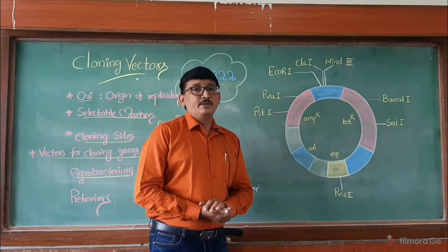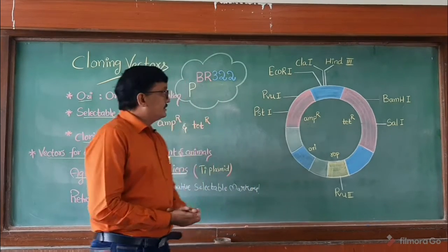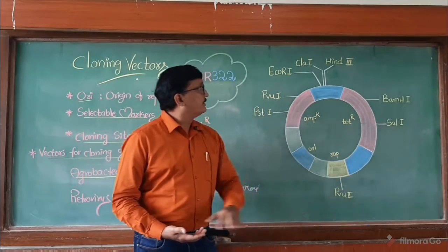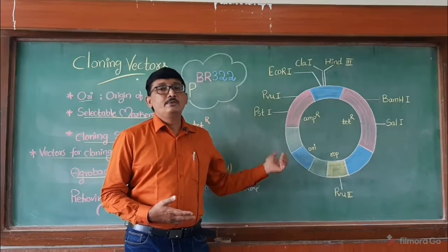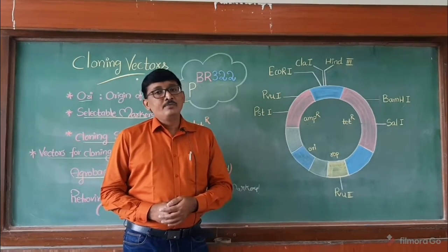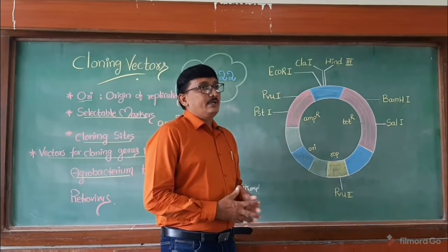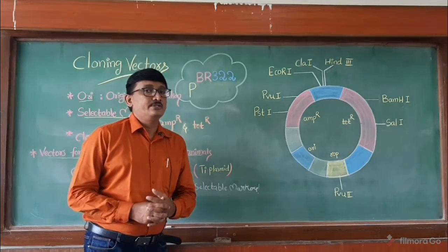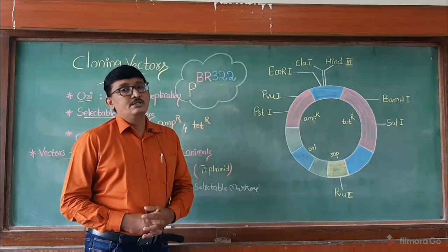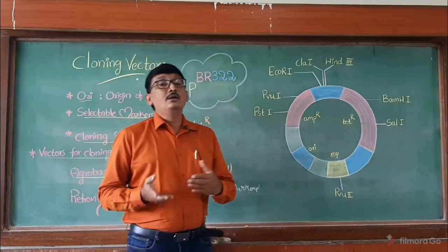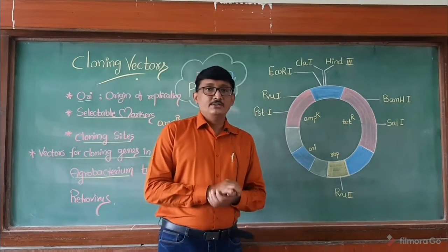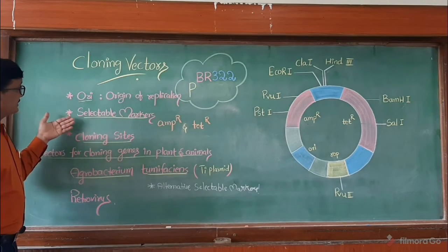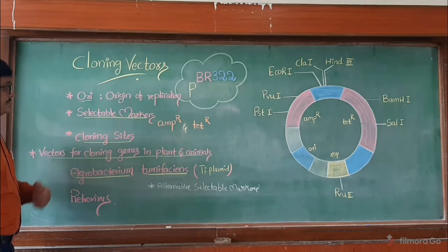In this diagram you can see all the different regions present in this PBR 322 plasmid. PBR 322 is one of the ideal or desired plasmids which has the desired features for genetic engineering to transfer desired genes into the host. These features include ORI, selectable markers, cloning sites, and others. Let us discuss them one by one.